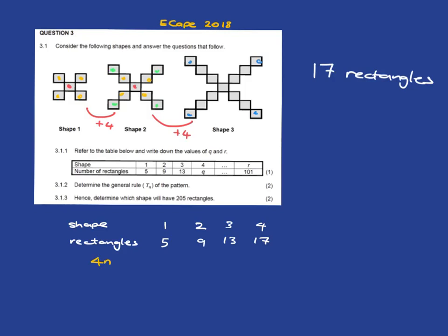If the formula was just 4n, then when n is one, right, the number of shapes is one, you'd have four. When n is two, you'd have eight. When n is three, you'd have 12. And when n is four, you'd have 16. But that isn't what we wanted, right? When n is one, we wanted five. When n is two, we wanted nine. When n is three, we wanted 13. When n is four, we wanted 17. So what do we have to do to correct this line to get to that line?